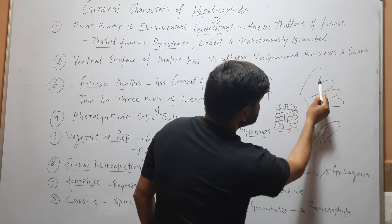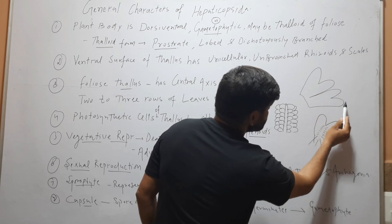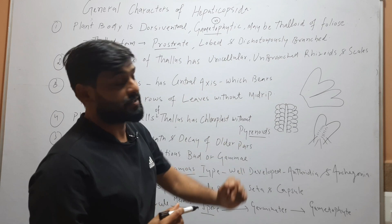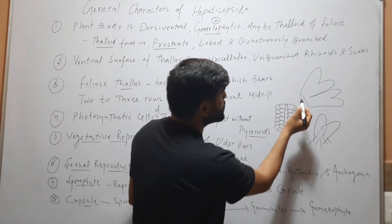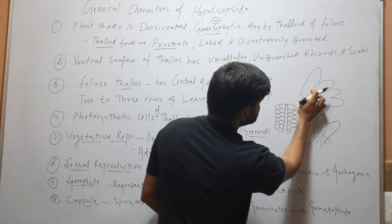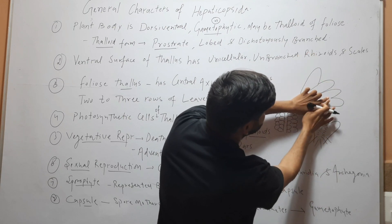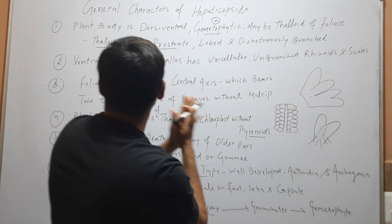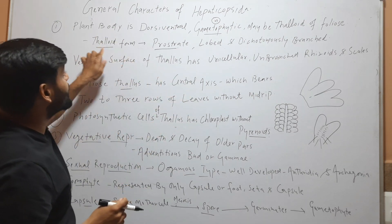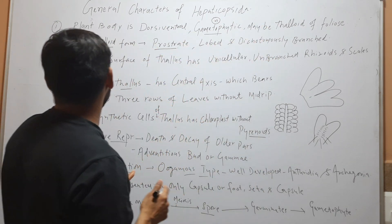You can see that the body is lobed — it has lobes — and it is dichotomously branched. The branching is dichotomous, meaning from one branch it divides into two. So when the plant body is thaloid, it is prostrate, lobed, and dichotomously branched.